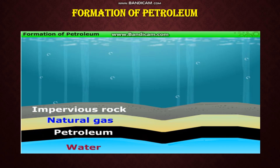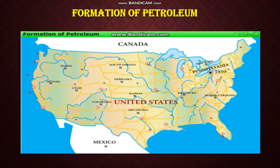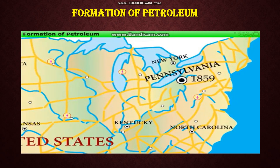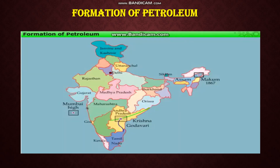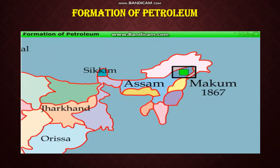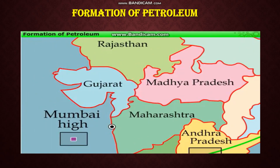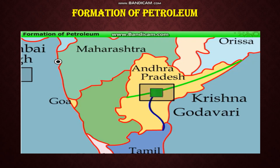The petroleum layer is formed above the underground water layer as it is lighter than water. Petroleum is a non-renewable resource and is used on a very large scale. The world's first oil well was drilled in Pennsylvania, USA, in 1859. About eight years later, in 1867, oil was found at Maccum in Assam. In India, oil is also found in Gujarat, Mumbai High, and in the basins of Godavari and Krishna.